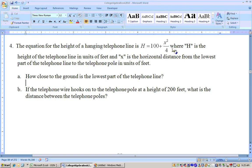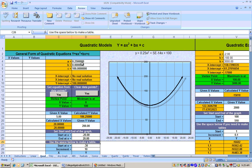Problem four says the equation of a hanging telephone line is right here. H is the height of the telephone line, and X is the horizontal distance from the lowest part of the telephone pole in feet. How close to the ground is the lowest part of the telephone line? And then what's the distance between the telephone poles if it hooks on at a height of 200 feet? Well, this is a quadratic. Put in my coefficients, which are one-fourth, zero for the linear, and 100 for the constant.